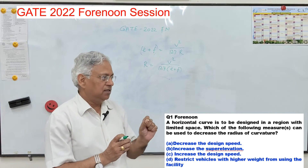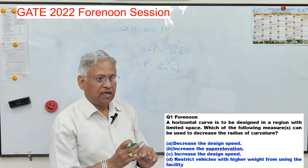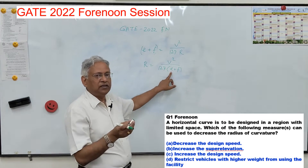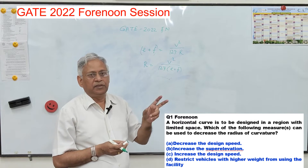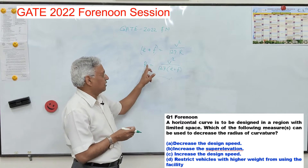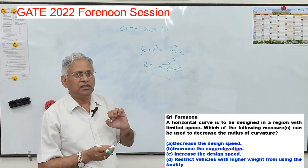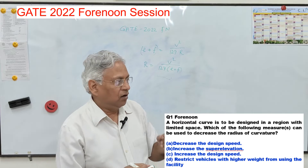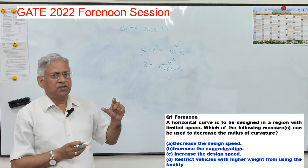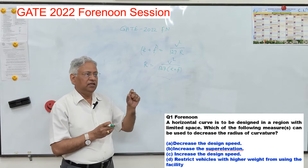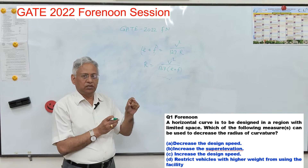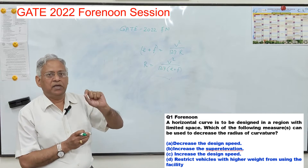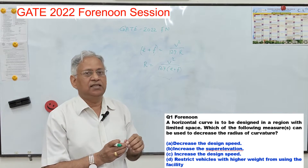Option one is decrease the design speed — this is correct. Option two, increase super elevation, will not help because there is a limit to increasing super elevation. Option three, increase the design speed — no, if you increase design speed, R will increase. Option four, restrict vehicles with higher weight, could also be an answer but since only a single answer is required, the best option is decrease the design speed.